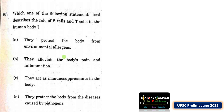B cells and T cells are responsible for specific immune defense, accounting for the third line of immunity. Option A is not correct as it is not a specific defense. Option B — alleviating pain — is not specific. Option C — acting as immunosuppressants — is incorrect because they are actually involved in immune response. Option D — they protect the body from diseases caused by pathogens — is the correct answer.